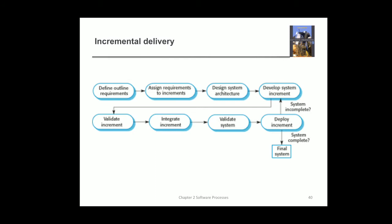This is the incremental delivery figure. First, we define the outline requirements — whatever requirements are to be included in the system are taken from the customer. Next, we assign requirements to the increments, dividing them into various increments — deciding which things should be considered in the first increment and in upcoming increments. Next is designing the overall system architecture. Once the overall architecture is done, then we go for development of the system increments — individual increments are developed. Then we validate that increment.